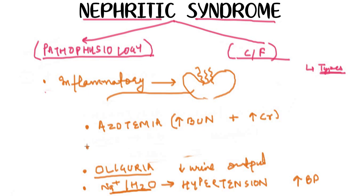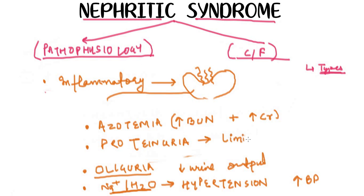Also in case of nephritic syndrome there will be a little proteinuria, but not in the nephrotic range. There will be limited proteinuria in case of nephritic syndrome. So these are the main clinical findings found in nephritic syndrome.